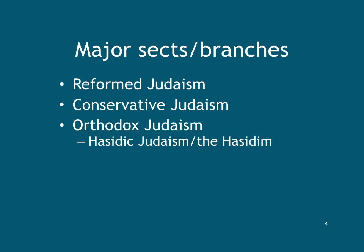As a result of changes and different traditions that evolved from different interpretations of how the way ought to be lived, there are three major sects or branches of Judaism: Reformed Judaism, Conservative Judaism, and Orthodox Judaism. An important subcategory of Orthodox Judaism is the Hasidim, or Hasidic Judaism.